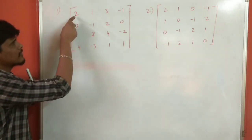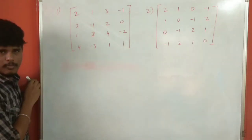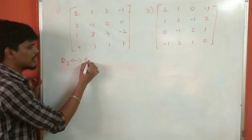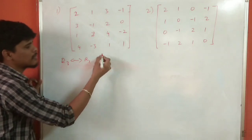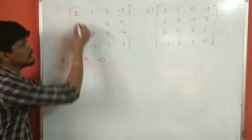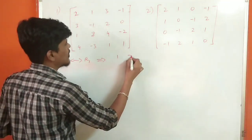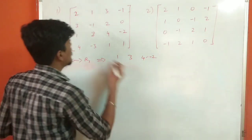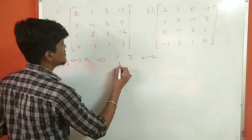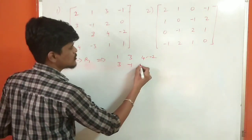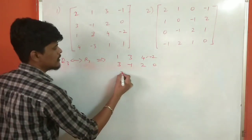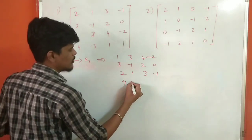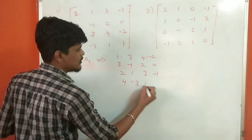The problem: we exchange Rho3 and Rho1. After the exchange, we get: Row 1: 1, 3, 4, minus 2. Row 2: 2, 2, 0, 2. Row 3: 1, 3, 3, minus 1. Row 4: 4, minus 3, 1, 1.